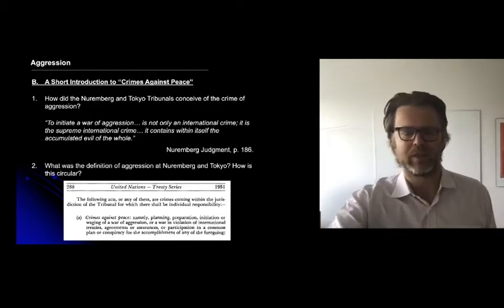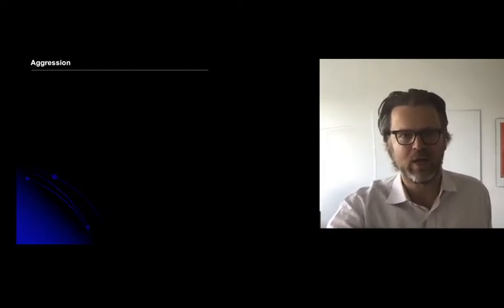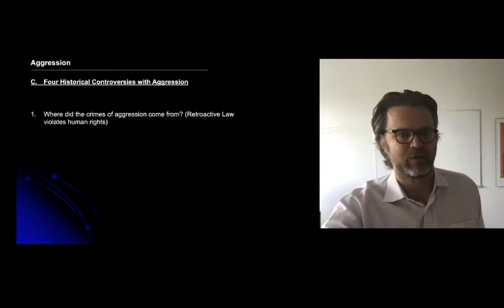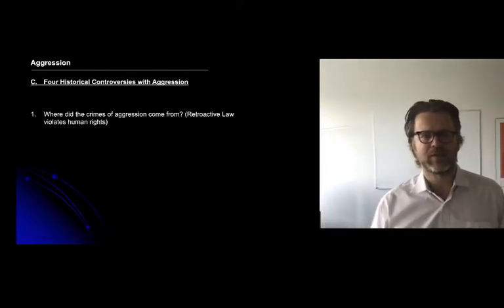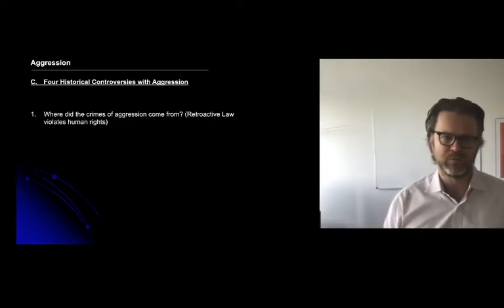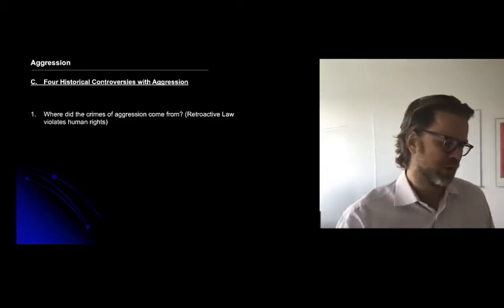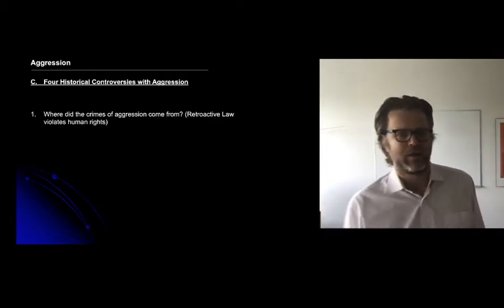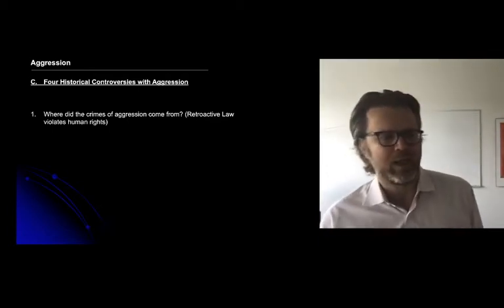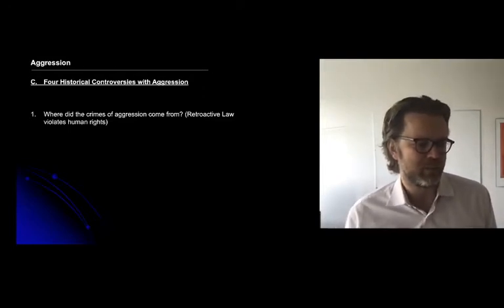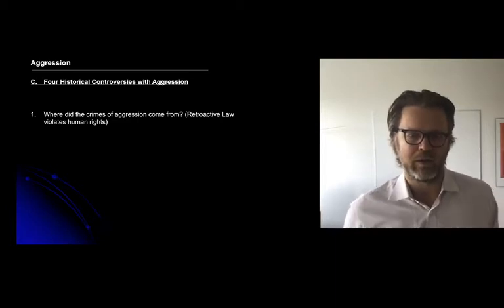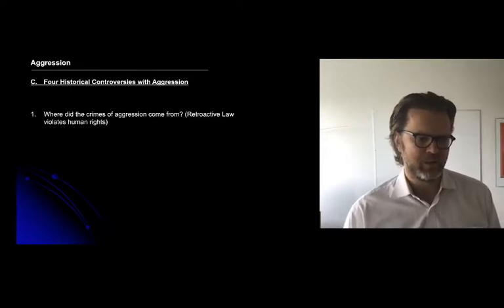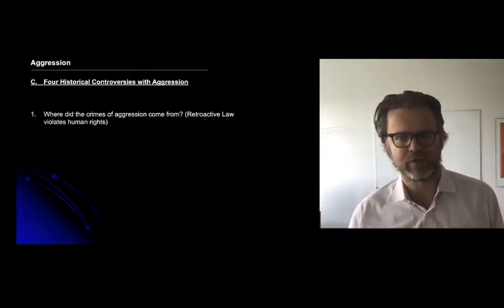That provides a framework from which I want to discuss four historical controversies with aggression. The first picks up on our class on retroactive criminal law. The first controversy is: where does this crime come from exactly? As we discussed previously, there had been an important process of outlawing war embodied in the Kellogg-Briand Pact of 1928.